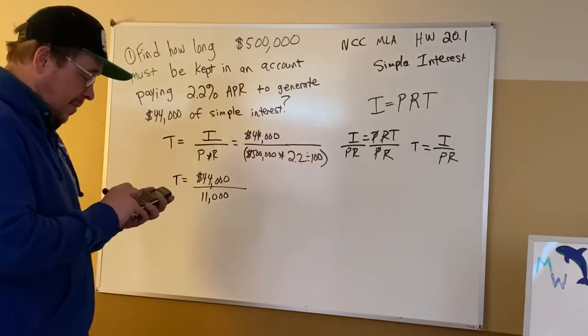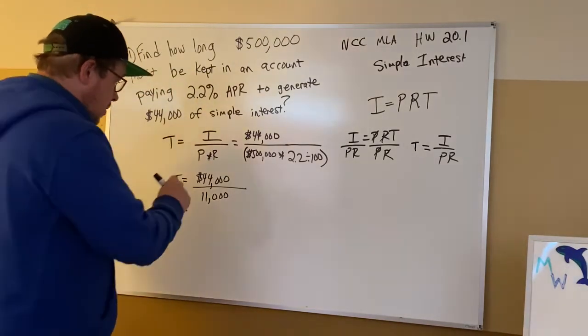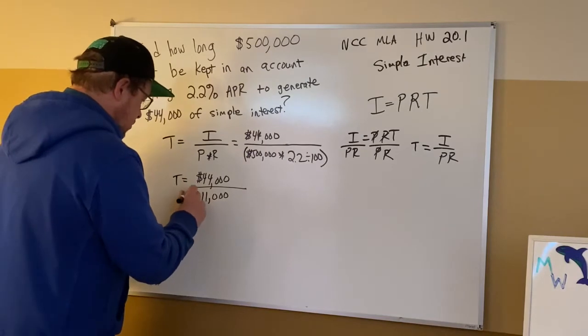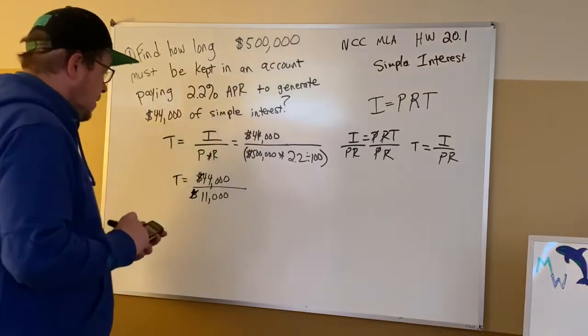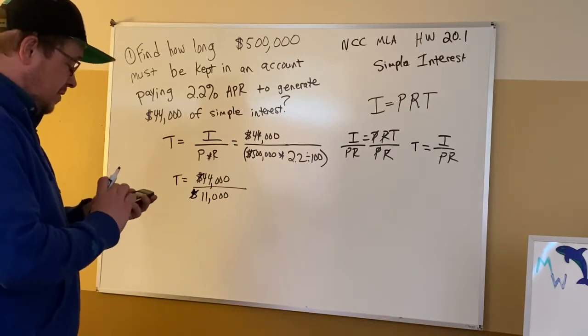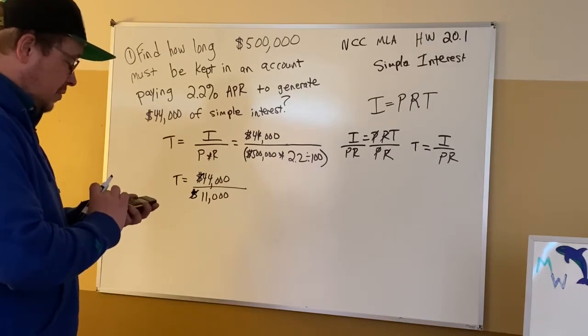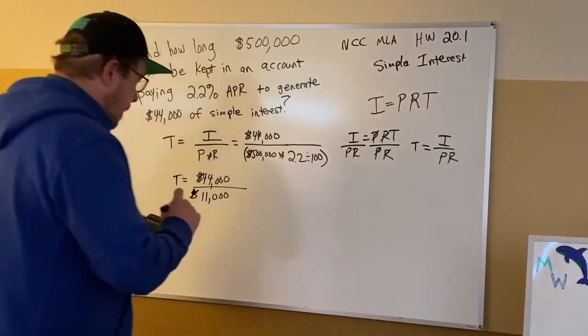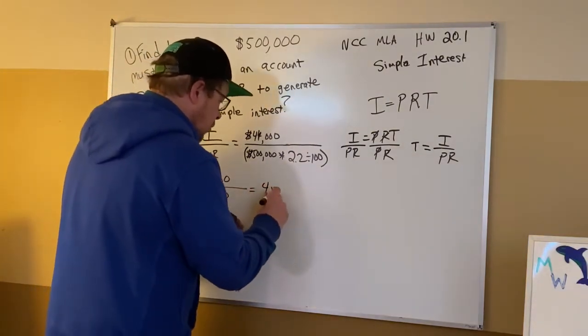So now I'll go back and I'll put in my 44,000 and this dollar sign here too, which we can cancel. So I got my 44,000 divide by 11 with three zeros, and you'll see it's 4. And the answer is 4 years.